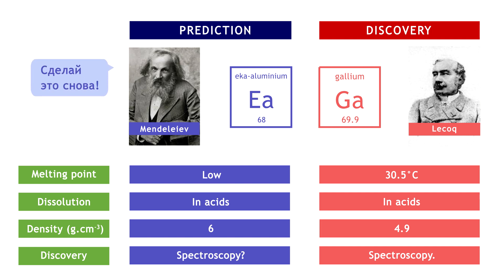Disagreeing with Lecoq's results about gallium's density, Mendeleev asked him to renew his measurement, which he did. Obviously, Mendeleev was the one who had been right.